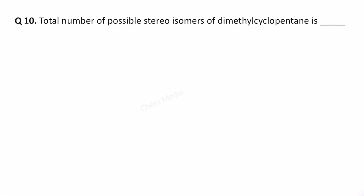Here is a question based on stereochemistry: what is the total number of possible stereoisomers of dimethyl cyclopentane? This is not a difficult question, but if you are not very clear about the concepts of meso compounds, enantiomers, and the difference between stereoisomers and structural isomers, there are plenty of opportunities to make a mistake on questions like this.